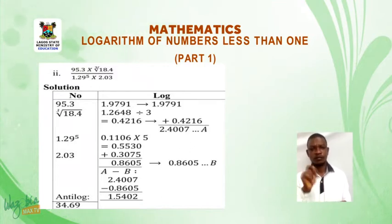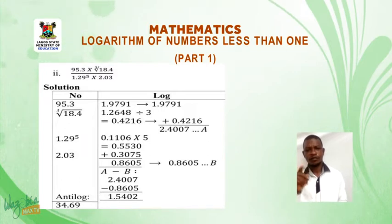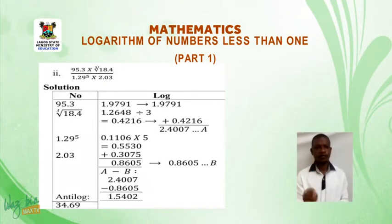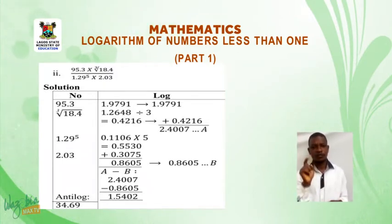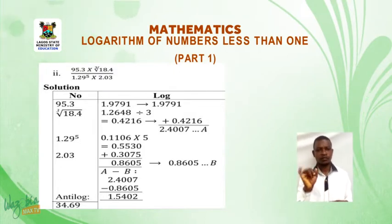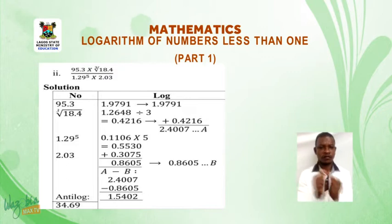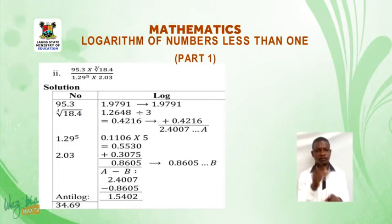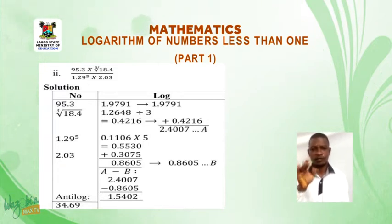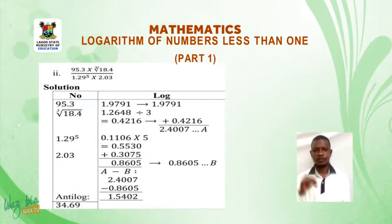Now we go to the denominator. 1.29 raised to power 5 gives us 0.1106 times 5 because of the power of 5, which gives us 0.5530. And 2.03 gives us 0.3075. We add both of them together because both of them are multiplied from the statement and the equation. So now when we add them together, we get 0.8605, tagged B.